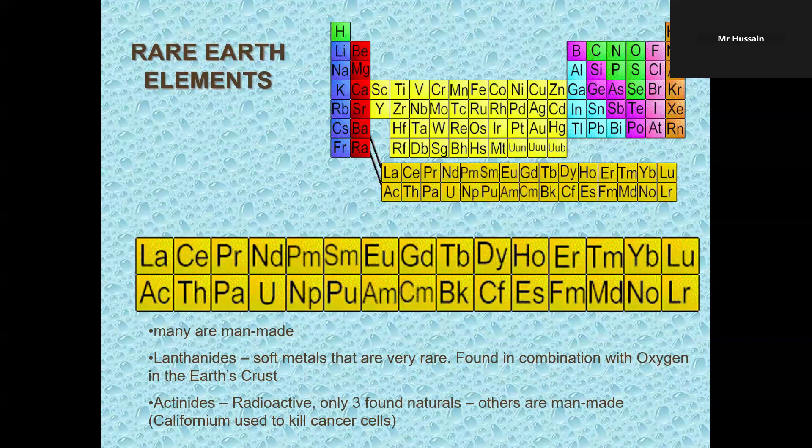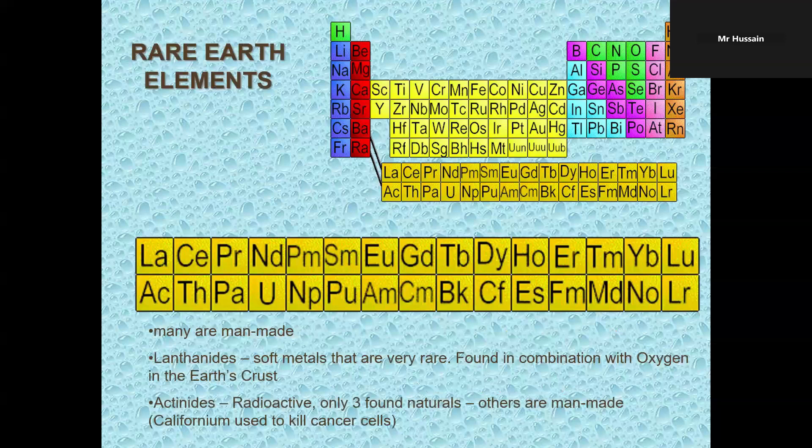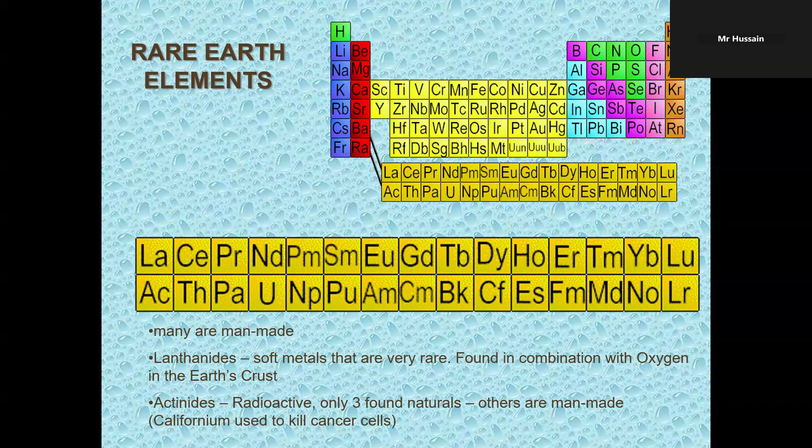Rare earth metals, the bottom two rows of the periodic table. One row, the top one, is called lanthanides. They are soft metals that are very rare, found in combination with oxygen in the earth's crust. The bottom row, actinides, they are radioactive. Only three elements from actinides are natural. All others are lab made or man-made.